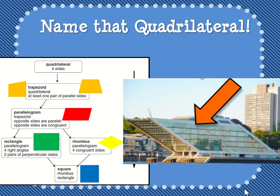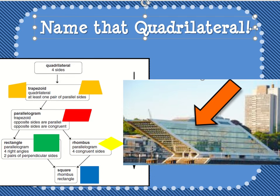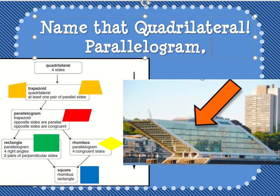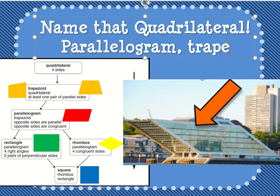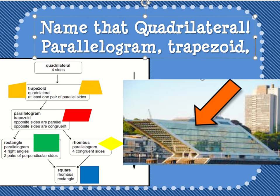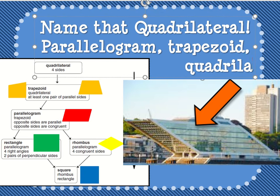Let's name that quadrilateral. Hopefully you named that as a parallelogram — it is a parallelogram because opposite sides are parallel and opposite sides are equal. But remember, most quadrilaterals have more than one name. It's not just a parallelogram; it's also a trapezoid because it has at least one pair of parallel sides, and it is also a quadrilateral.